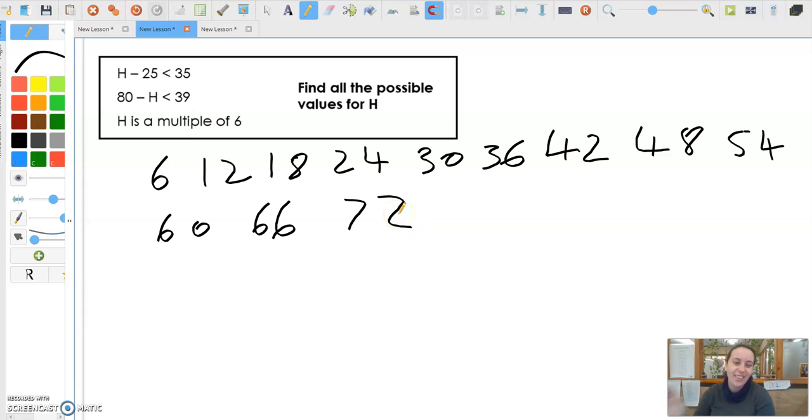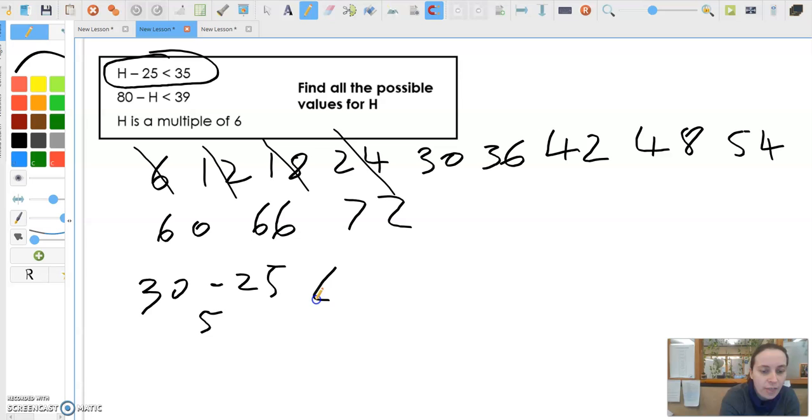Okay, I hope you worked it out. What I did, I worked out this one first and found all the possibilities. I figured out that it can't be 6 because 6 minus 25 will go into negatives. 12 minus 25 goes into negatives. 18 minus 25 goes into negatives. 24 minus 25 goes into negatives. But 30 would work, wouldn't it? 30 take away 25 is 5 and that is less than 35. So I've got 30 as my first one.